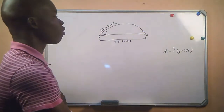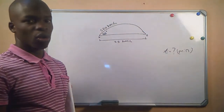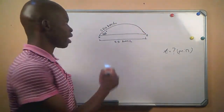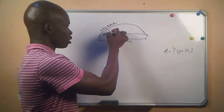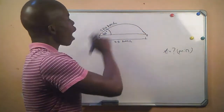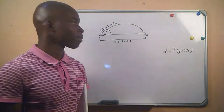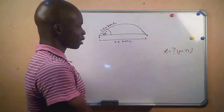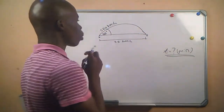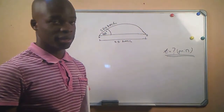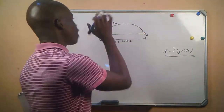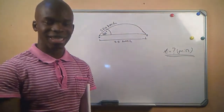The missile will follow a parabolic path because it was fired at an angle of 50 degrees — meaning from point A to point B the missile follows a parabolic path. We are asked to calculate the time it took for the missile to travel from point A to point B, which is the displacement. They gave us the displacement and also the velocity at which the missile was fired.